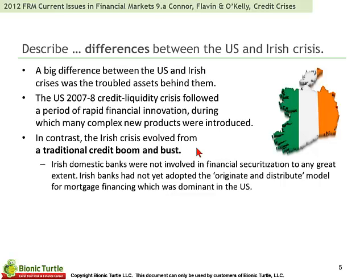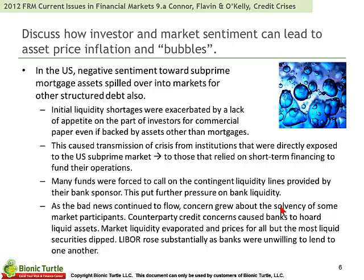In contrast, the Irish crisis evolved from a traditional credit boom and bust. The authors point out that Irish banks were not involved in financial securitization to any great extent, and had not really adopted the originate-and-distribute model prevalent in the U.S. In the U.S., negative sentiment towards subprime mortgage assets spilled over into markets for other structured debt — what some have called guilt by association, or one of the aspects of contagion, where proximate assets are tainted by association.